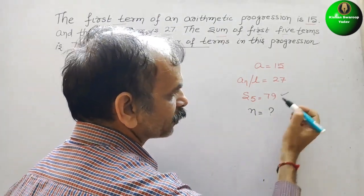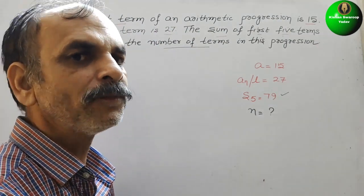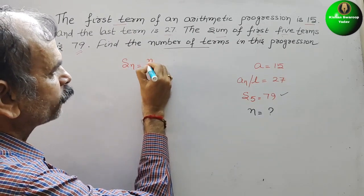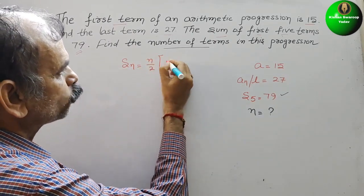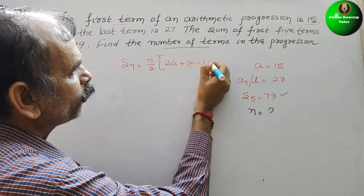We will solve this first. Just write the sum formula: Sn is equal to n by 2, here comes 2A plus n minus 1 into D.